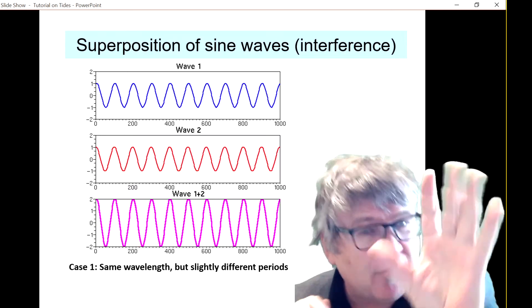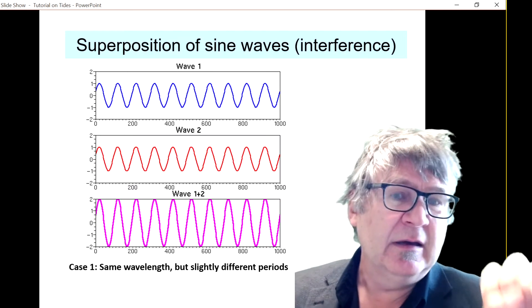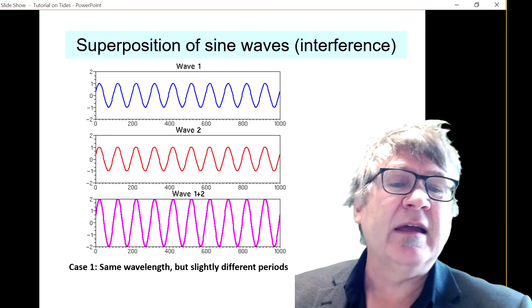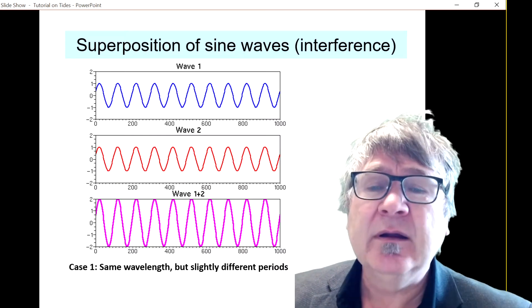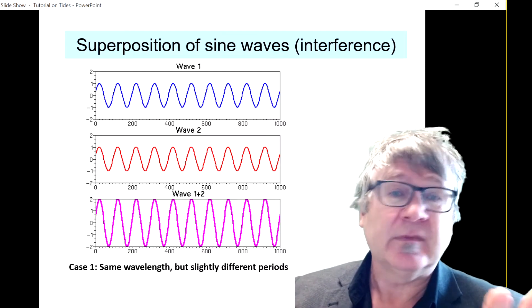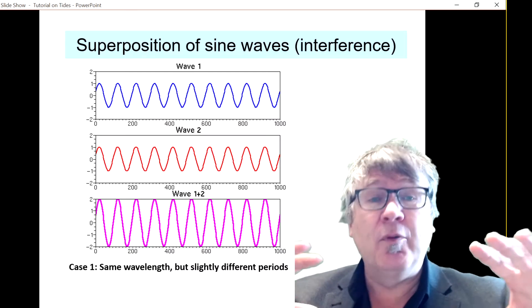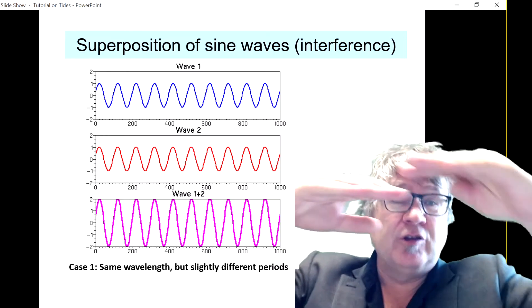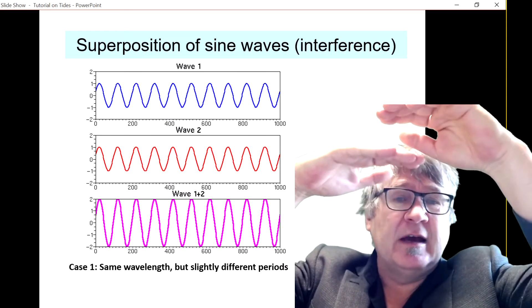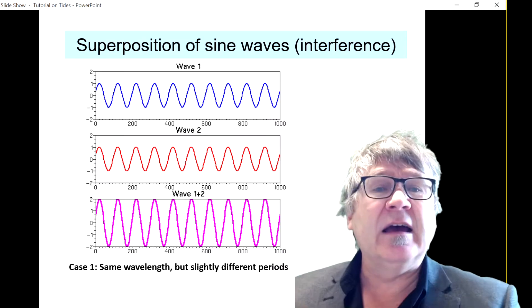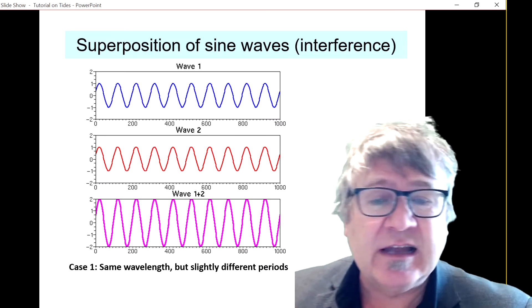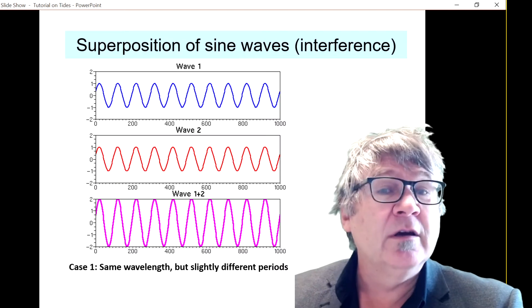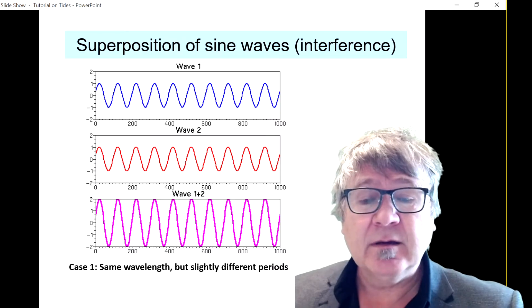Something very similar to this happens with a tide such that you get what we call a spring neap tidal cycle. There are times where the tides, the two components of the tides, sit on top of each other, create maximum tidal range. At other times you get a cancellation or a partial cancellation of the signal called spring tide.